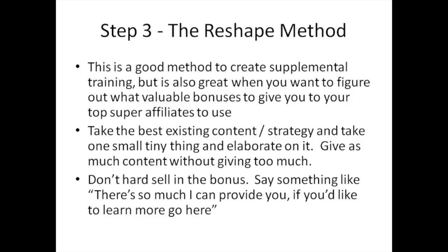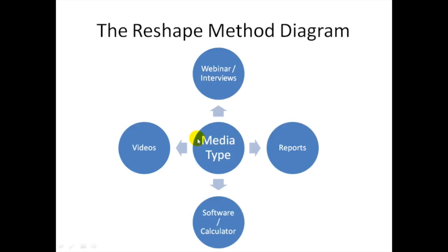The Reshape Method works based on your media type. If your existing product is a report, reshape that same content into a video, webinar, interview, software, or calculator. Calculators are really cool — you can have one created on Freelancer.com for around $25 to $50. If your product is software, don't create more software — reshape it into videos, webinars, and reports as bonuses. If your product is a webinar, consider adding videos, reports, and software. That's the whole idea of the Reshape Method.